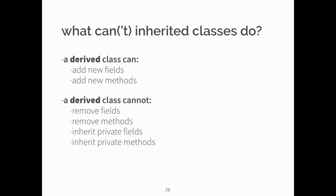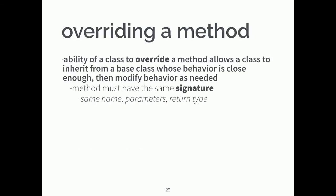What can and can't inherited classes do? A derived class can add new fields and new methods. What it cannot do is remove fields, remove methods, inherit private fields, or inherit private methods. So if I put anything private in the base class — for example in Shape — the classes that extend it don't have access to those private members.